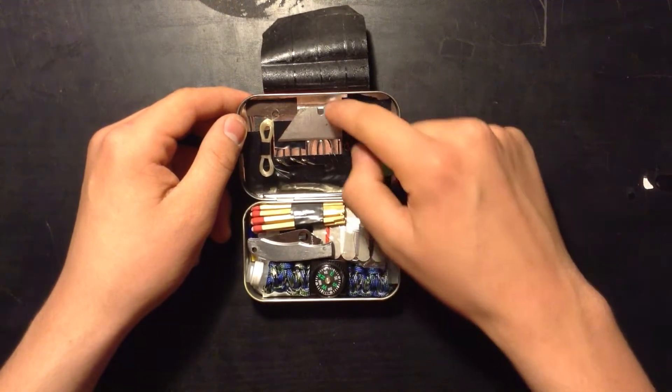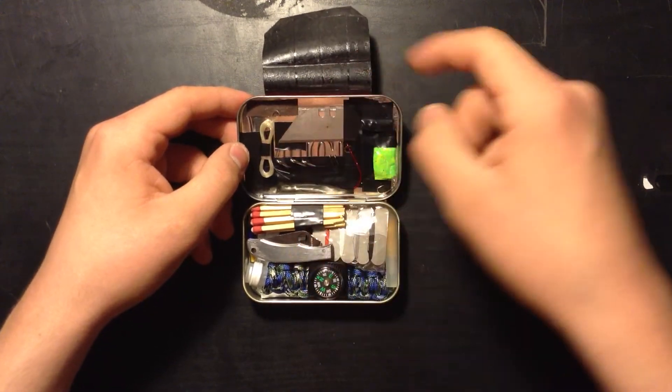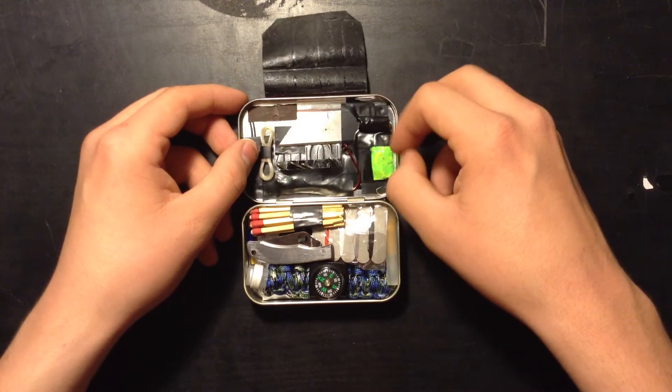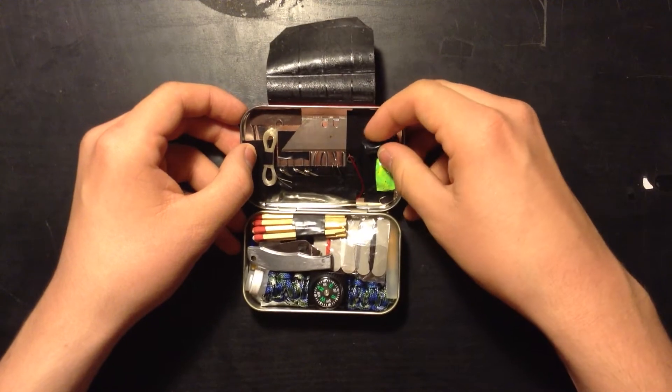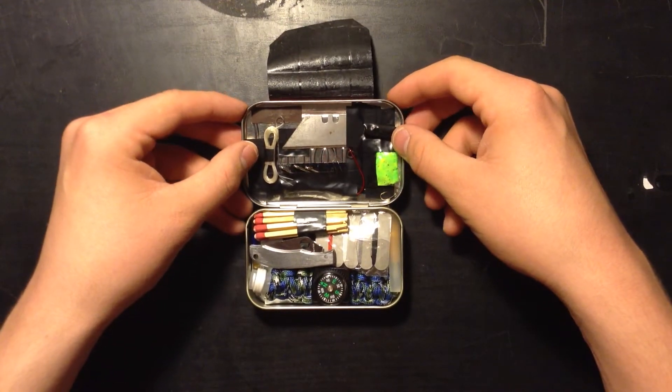Next, I have a razor blade. These can come handy very much for cutting wire, cutting stuff like this, separating bait, many uses with this. Next, I got three lead weights. In a survival situation, I don't know how these will come in handy, but they're there just in case I need the string or the bait to sink to the bottom.